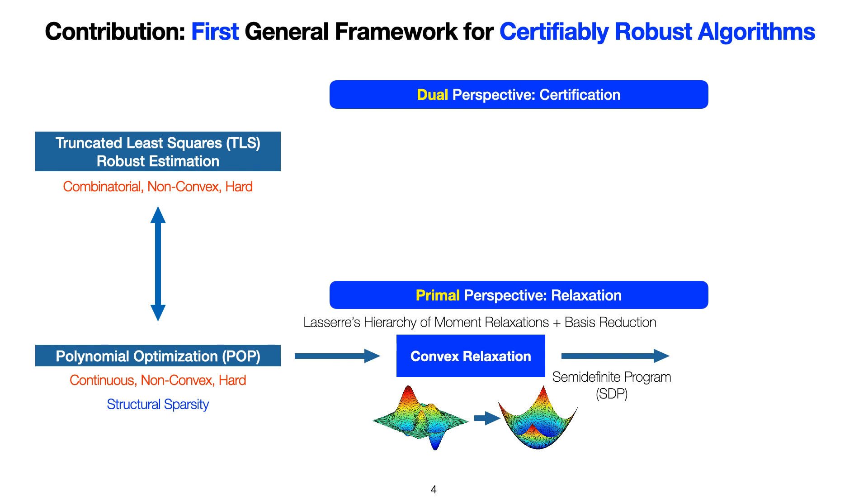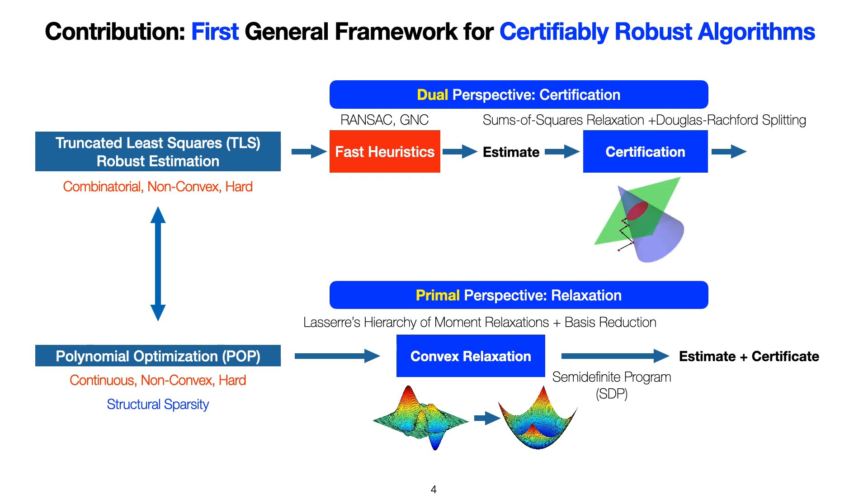Solving the SDP simultaneously returns the estimate and the certificate. In the dual perspective, we first use existing heuristics to obtain a candidate estimate. But then, we use sum of squares relaxation and Douglas-Rachford splitting to verify the correctness of the estimate to obtain the certificate.